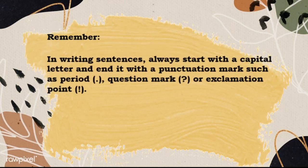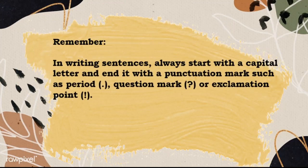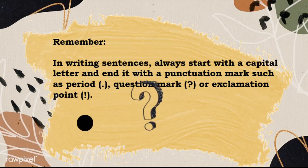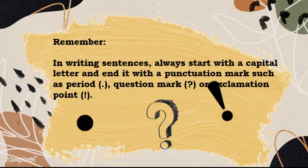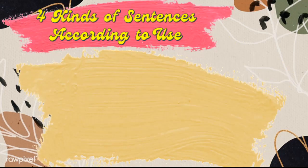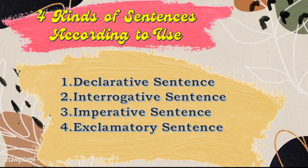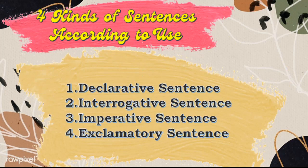Remember, in writing sentences, always start with a capital letter and end it with a punctuation mark such as a period, question mark, or exclamation point. So here are the four kinds of sentences according to use: declarative sentence, interrogative sentence, imperative sentence, and exclamatory sentence.